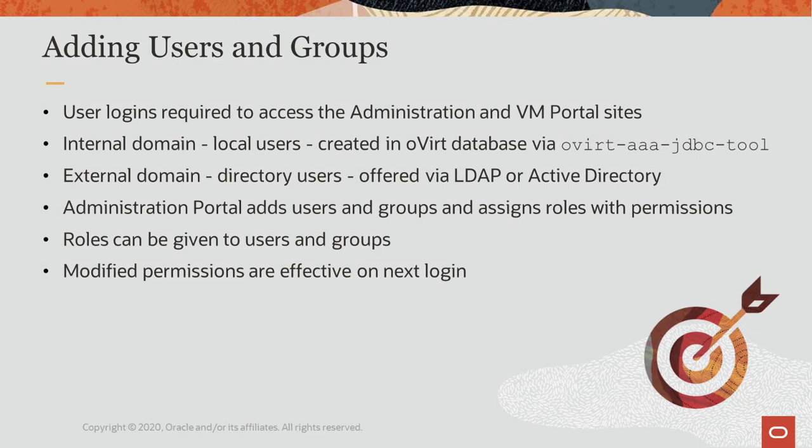Before a user can log in, the user must first be created and assigned permissions to manage elements of the system. Internal domain, also called local users, are created through command line and are local to the oVirt database for the system. External directory servers such as LDAP or Active Directory can be attached and offer users to the system from external domains. A user can be standalone or associated with a group, which allows permissions to be assigned to the group from which the users inherit the permissions. These users and groups can then be added to the system through the administration portal and assigned roles to have the required permissions associated with them. Any changes to a user's permissions will be in effect after the user logs in again.